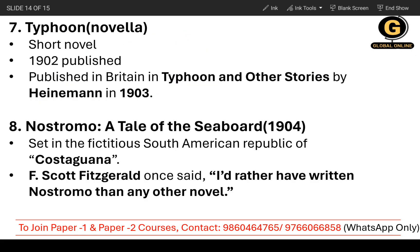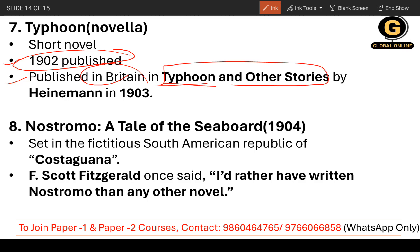The seventh work is Typhoon, also a novella — a short novel. It was published in 1902. The basic details are needed here: it was published in Britain as Typhoon and Other Stories by Heinemann in 1903. So it was published in 1902 as well, and also published in Britain in 1903 with the title Typhoon and Other Stories.